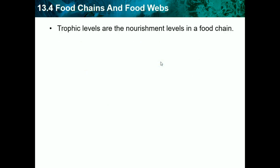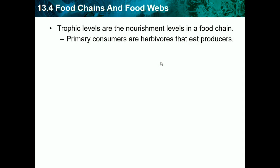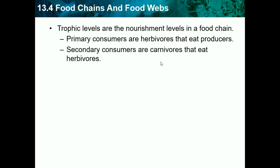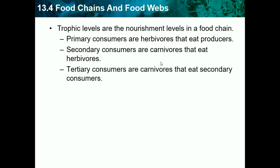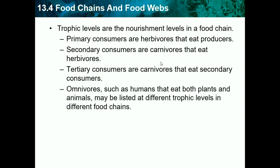Trophic levels are the nourishment levels in a food chain — they show different states of nourishment in food webs. Primary consumers are herbivores that eat producers; they're the first consumers and must eat the producer. Secondary consumers are second in consuming, so they eat primary consumers, which are usually herbivores. Tertiary consumers are carnivores that eat secondary consumers. Omnivores, such as humans, eat both plants and animals and may be listed at different trophic levels in different food chains.